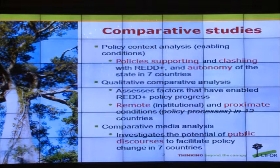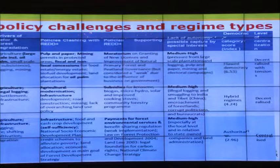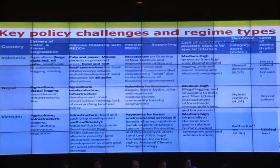In the policy context analysis, we investigated seven countries, looking at drivers of deforestation and the policy landscape — identifying policies potentially supporting REDD. For the three Asian countries, one example of a supporting policy in Indonesia is the moratorium on granting new licenses in primary forests and peatlands, implemented in 2011 and renewed until 2015. Similarly, Nepal and Vietnam also have policies supporting REDD, including Vietnam's law on payments for environmental services and Nepal's energy efficiency subsidies.